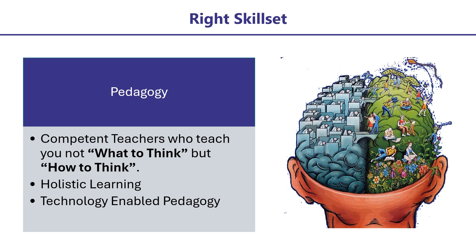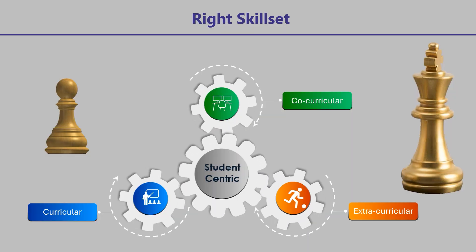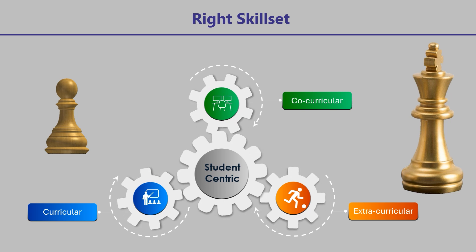Choose a college where faculty teaches you not what to think, but how to think. Learning should trigger both left brain and right brain. A lot of learning happens outside the classroom through multiple activities including sports. Check that the college has good infrastructure for sports and other outdoor activities too. Find out if technology is an integral part of pedagogy — for example, smart classrooms where all faculty notes and video lectures are available on a learning management system, i.e., an e-repository. The college needs to have a vibrant ecosystem which promotes curricular, co-curricular and extra-curricular activities.